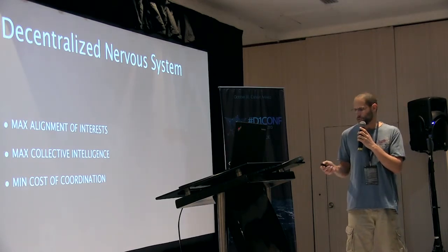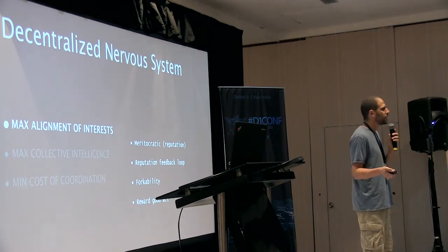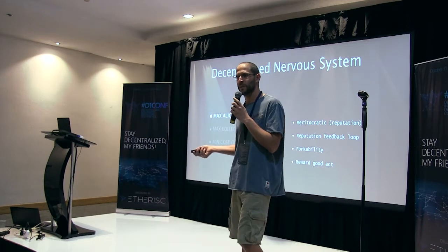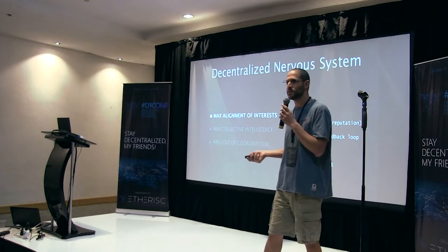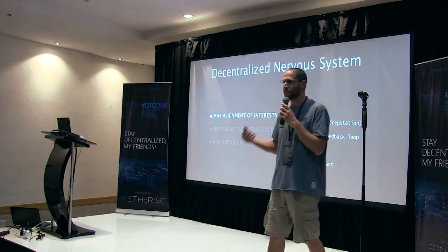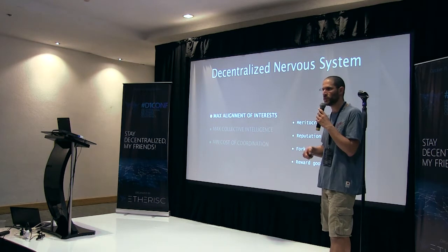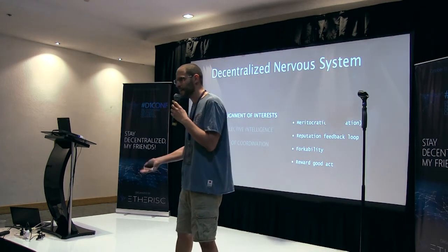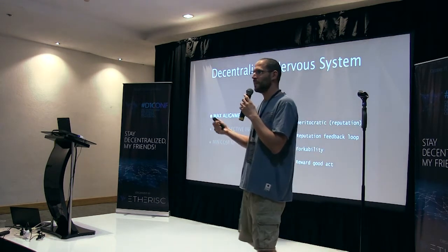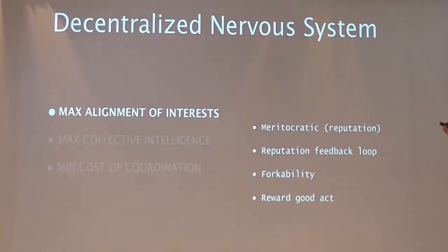Let's start with maximum alignment of interest. If you look at the global economy today, we already have a pretty much decentralized collective intelligence system. But the problem is there is no mechanism for alignment of interest. If I'm a company with competitors, I have an incentive to damage my competitors. If I'm an oil giant, I have an incentive to misinform society about fossil fuels and global warming. If I'm a tobacco industry giant, I have an incentive to disinform society about the healthiness of my product. There is a built-in element of misalignment of interest within any win-lose zero-sum economy.